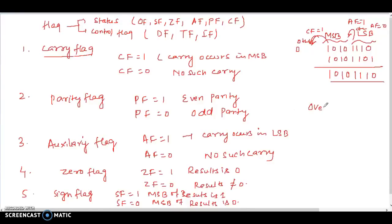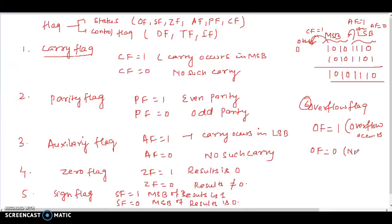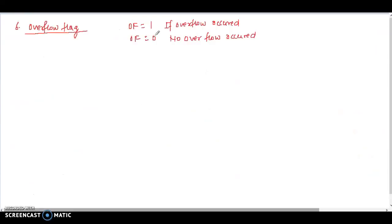The sixth flag is the overflow flag. Overflow flag is equal to 1 when overflow occurs, and overflow flag is equal to 0 if no overflow occurs. We will discuss this in detail with an example. First, let me clearly explain what overflow means and when a value is said to be out of range.